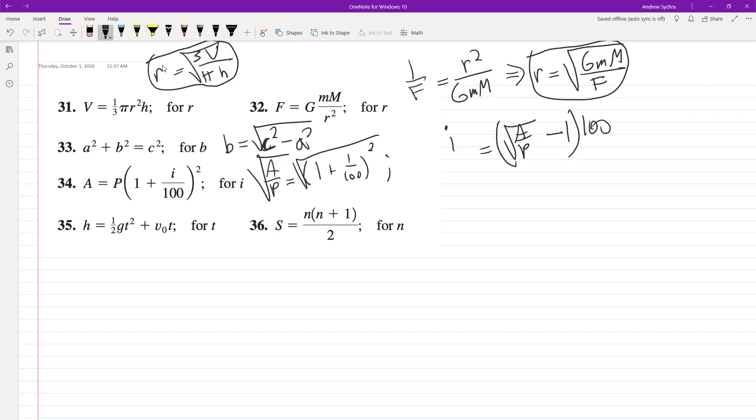All right, 35. Solve for T. Hmm. Looks like we're going to complete the square, maybe? Yeah, I think so.